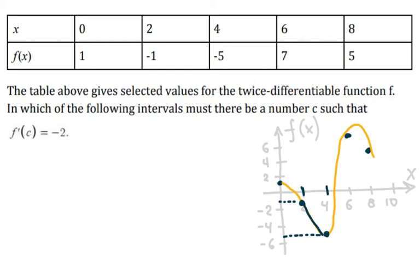So the interval that you would look at would be between 2 and 4. The other one would have different slopes.